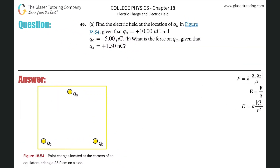Number 49, letter A: find the electric field at the location of q_a in Figure 18.54, given that q_b is 10 microcoulombs and q_c is negative 5 microcoulombs. I'm going to run through this problem — check out number 47 for a detailed analysis of electric fields. This one I'm just going to run through.